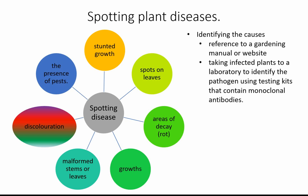In an exam you might be asked to identify the causes. That's difficult without a gardening manual or website to look things up. You can get plants analyzed in a laboratory using things like monoclonal antibodies to test for key pathogens, because they'll have antibodies against the antigens of those pathogens. That's not something a home gardener would do, but commercial growers may well want to.